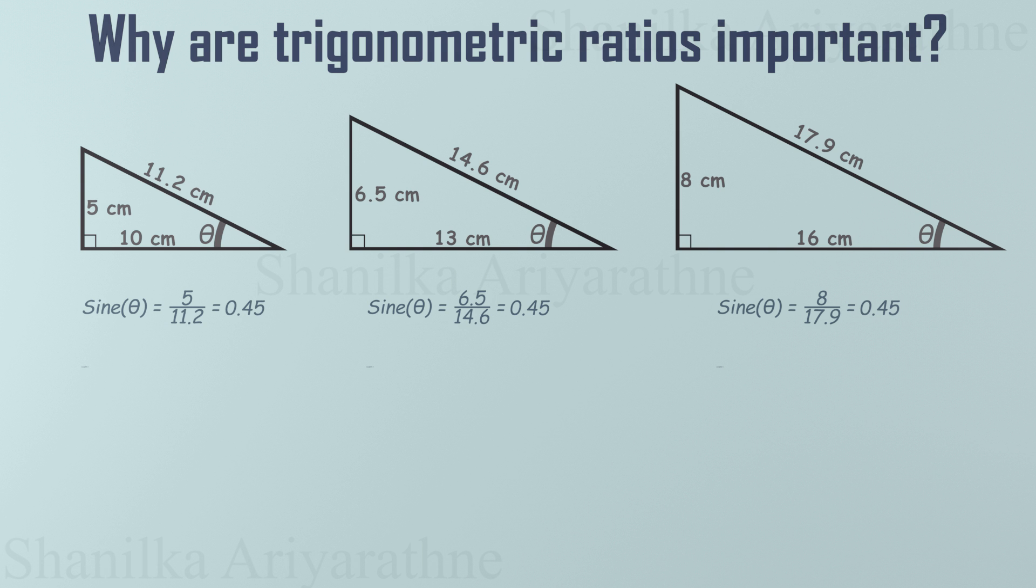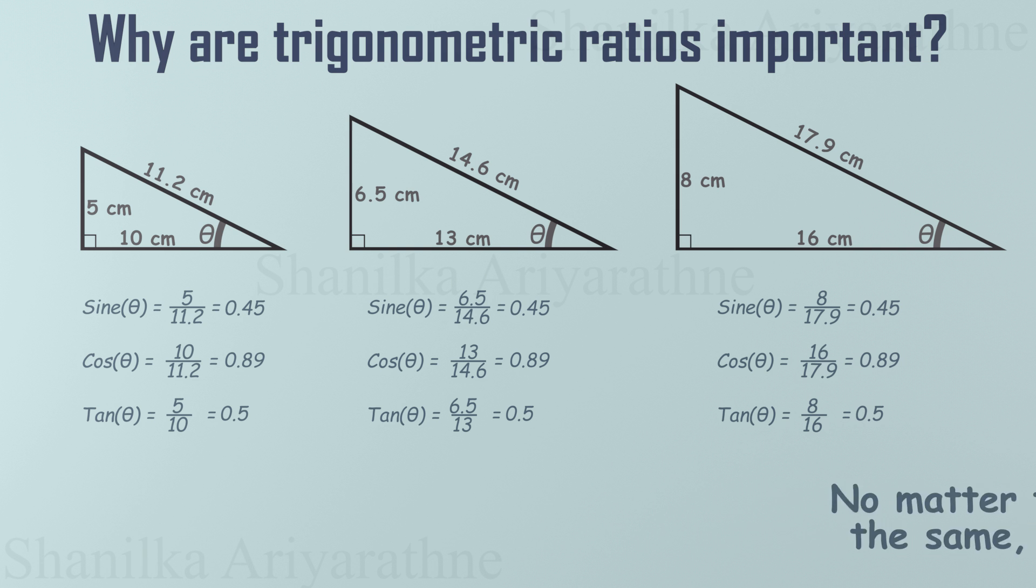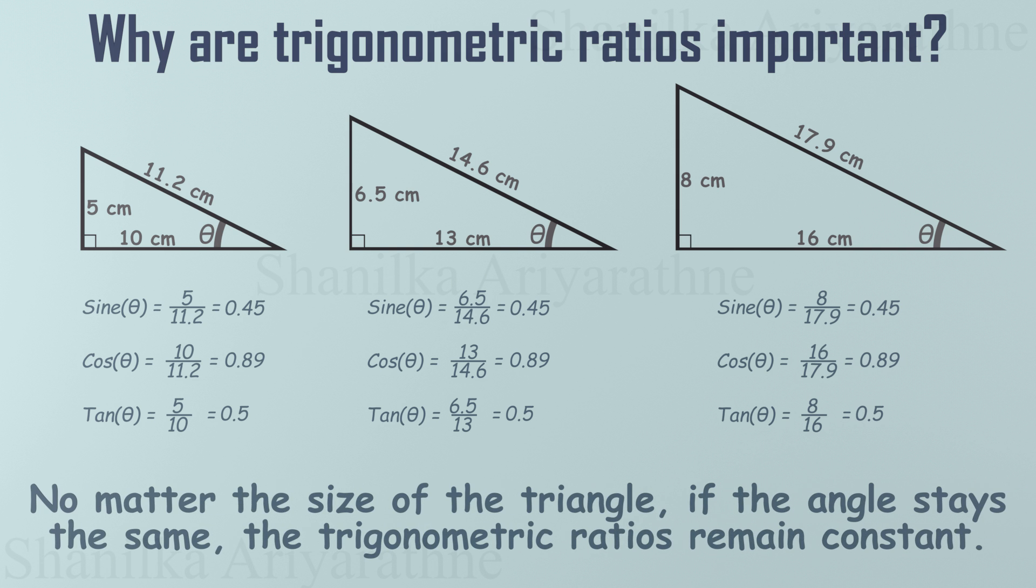Next, the cosine ratio: adjacent divided by hypotenuse. For each triangle, cosine of theta equals 0.89. Still no changes, no matter the triangle size. Finally, the tangent ratio: opposite divided by adjacent. For every triangle, tangent of theta equals 0.5. Do you see the pattern? No matter how big or small the triangle is, if the angle stays the same, the trigonometric ratios stay constant, like a universal rule.